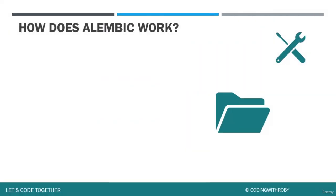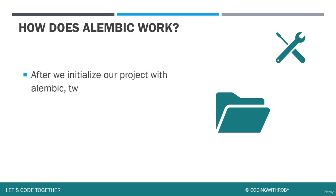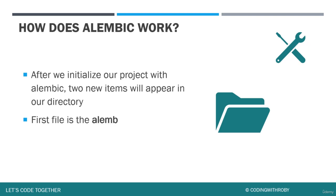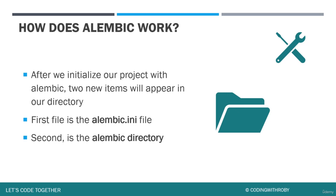What should we expect when we code this part of the lecture? After we initialize our project with Alembic, two items will appear in our directory. The first is the 'alembic.ini' file, and the second will be an actual Alembic directory within our project directory.